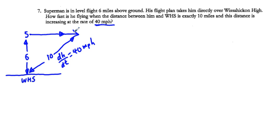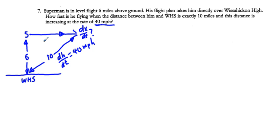We're trying to find dx/dt — the horizontal speed. The vertical distance is 6, the hypotenuse is 10, so by the 3-4-5 right triangle, the horizontal distance x = 8.